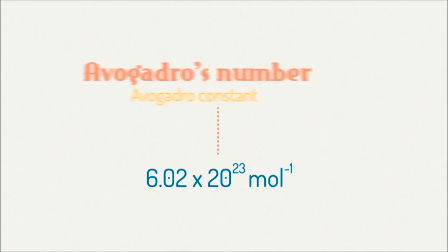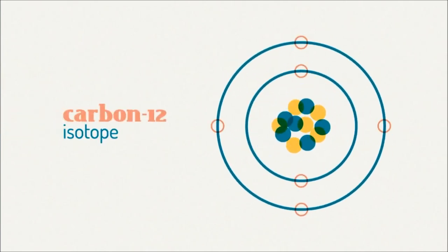Avogadro's number, Na, or the Avogadro constant, is 6.02 times 10 to the 23 particles per mole. It is the number of atoms per mole of the carbon-12 isotope.